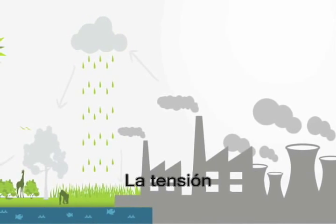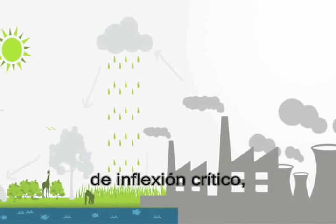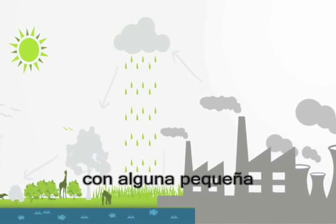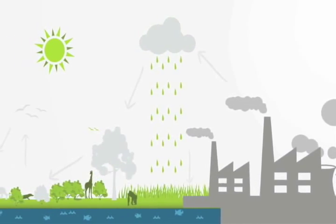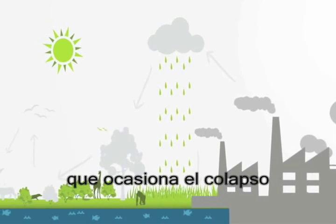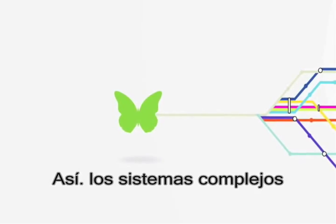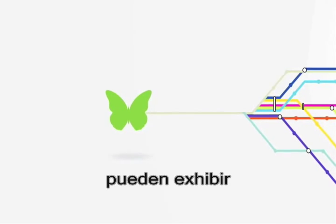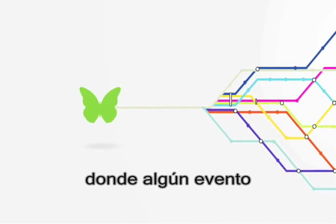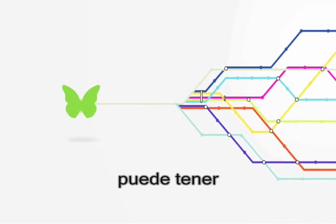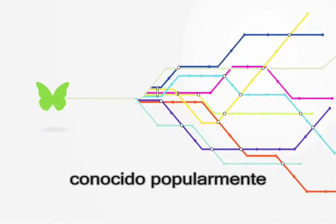So we continue expanding our industrial zone. At some point the stress from this additional input will reach a critical tipping point, with some small additional input being able to propagate through the system, creating a phase transition as our ecosystem collapses. Thus complex systems can exhibit both extraordinary robustness and extraordinary fragility, where some small event can have a large systemic effect, known popularly as the butterfly effect.